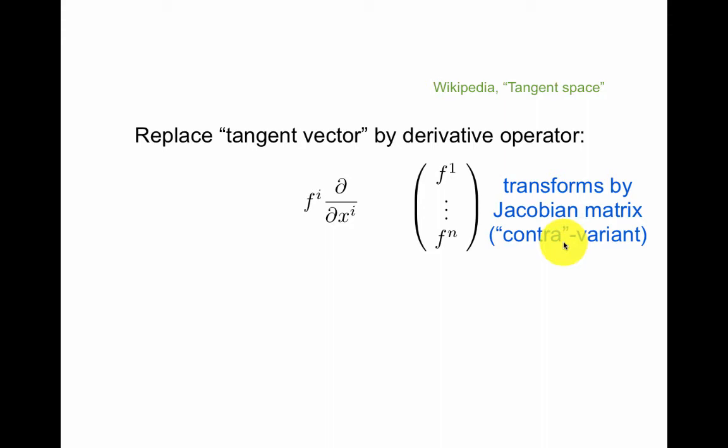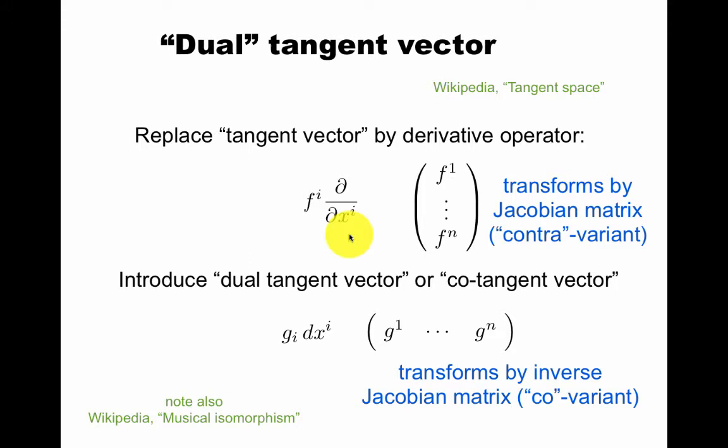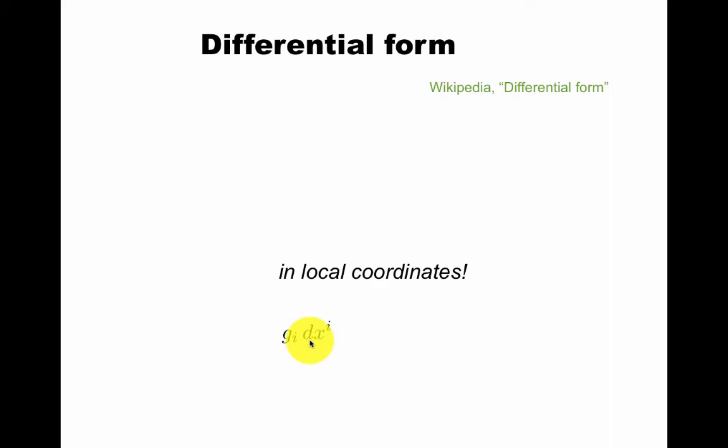Contravariant because it transforms oppositely to this. Now the dual tangent vector, a dual space in linear algebra, is the transpose. So if you take the transpose of this column vector, you get a row vector, and it transforms by the inverse Jacobian matrix. So it's covariant. If you know about metrics, you can raise and lower indices using the metric, and that's related to what's called the musical isomorphism in mathematics.